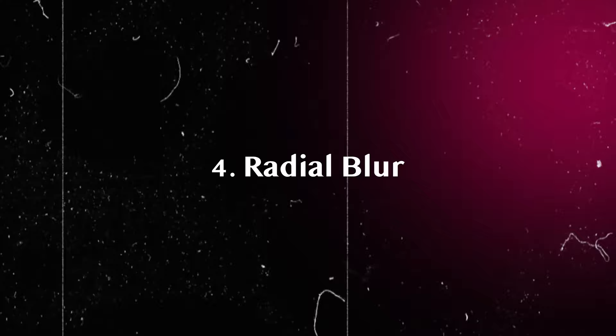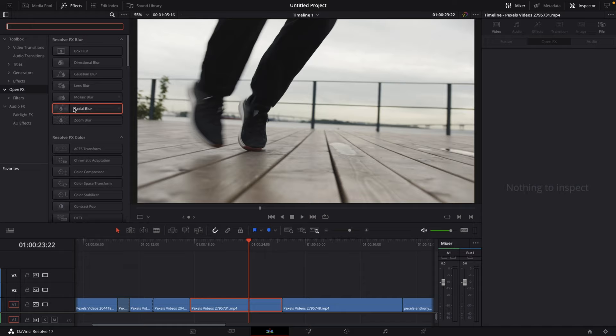Number four: radial blur. Go to your effects library, go to open effects, and search for radial blur. Drag the radial blur effect onto your clip, keyframe the strength, and adjust the position.